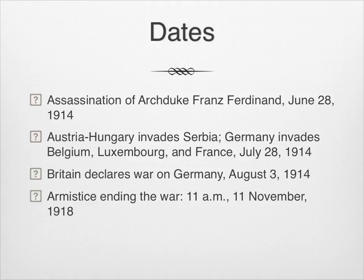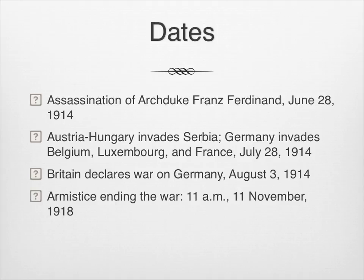Austria-Hungary gave Serbia some conditions meant to be impossible for them to meet, and invaded Serbia on July 28, 1914. At the same time, Germany invaded Belgium, Luxembourg, and France. Remember that map we looked at — Germany has potential enemies to either side. It really doesn't want a war with both at once, but since they are allied, that's what it's going to get. The German plan was to quickly move through neutral Belgium and Luxembourg, small countries with tiny militaries, in order to conquer France before Russia could mobilize its troops. Britain was allied to France and Russia and had an interest in defending neutral countries, so it entered the war a few days later, on August 3, 1914. The war lasted until November 11, 1918, when the armistice ceasing hostilities went into effect at 11 a.m.